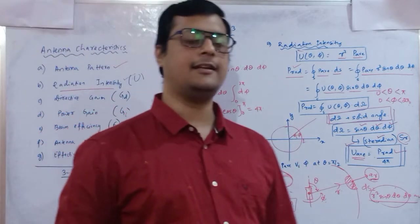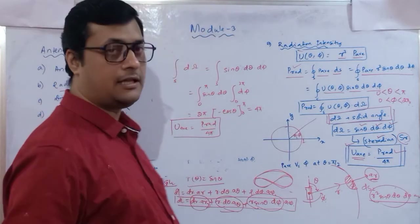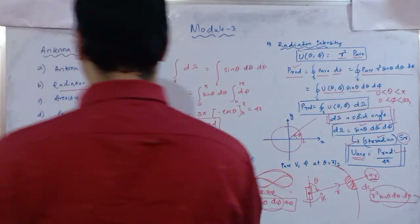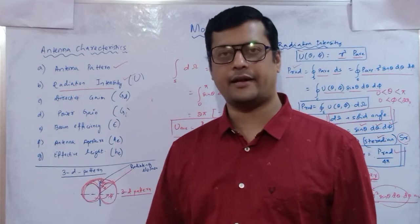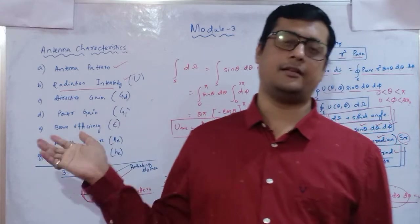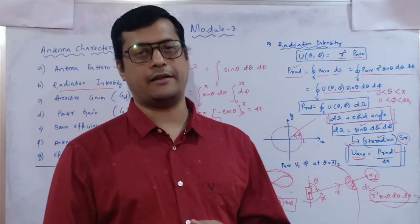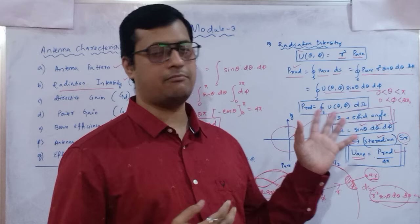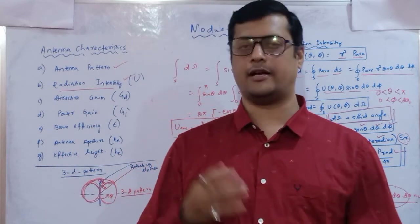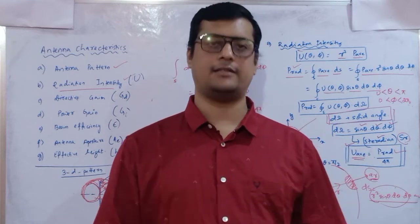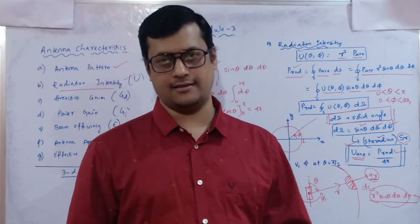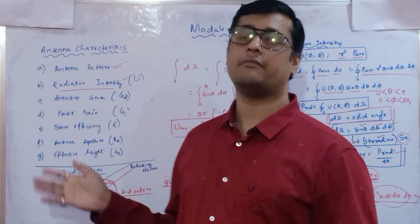Next we will discuss directive gain, power gain, beam efficiency, antenna aperture, and effective height in the next class, and if time permits we will solve some numericals. A soft copy of the book will be shared on Google Drive. There are different resources available — different books and lecture notes. First understand the basic antenna parameters, then we will enter the types of antennas and how to analyze them.